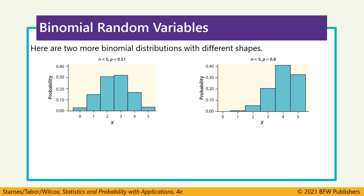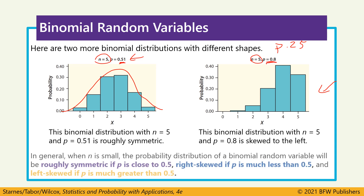Here are two other examples of what binomial distributions can look like, both with the same sample size of five. When P equals 0.8, the distribution is skewed to the left. When P equals 0.51, the distribution is approximately normal and symmetric. Generally, when P is close to 0.5, the distribution is approximately symmetric. When P is much less than 0.5, it's right-skewed, and when P is greater than 0.5, it's left-skewed. These patterns apply for small sample sizes; as sample size increases, all binomial distributions approach a more normal distribution.